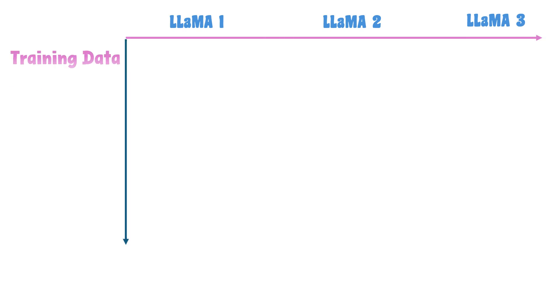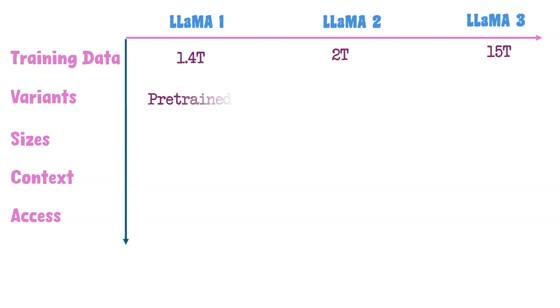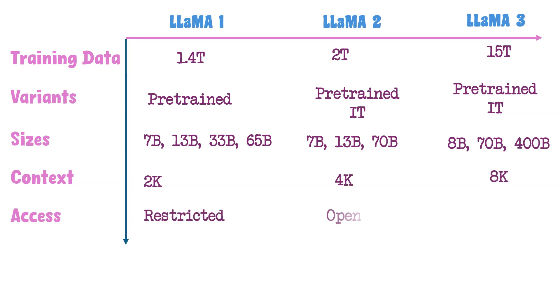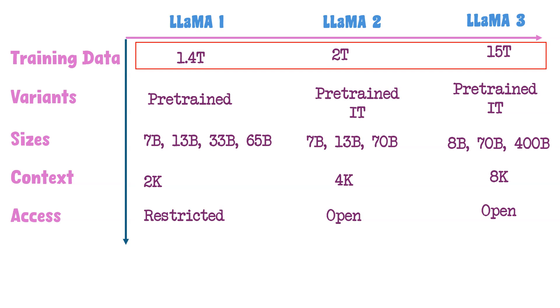Here is a comparison of the Llama 3 family of LLMs across training data sizes, variants, model sizes, context length, and accessibility. Llama 1 training data includes just 1.4 trillion tokens, Llama 2 training data includes 2 trillion tokens, and Llama 3 training data includes 15 trillion tokens.